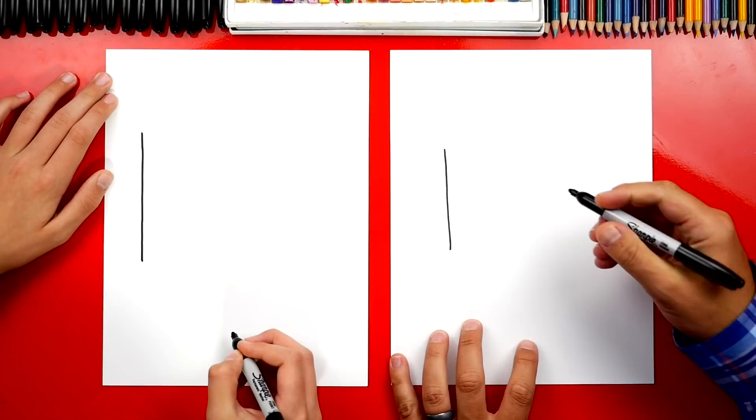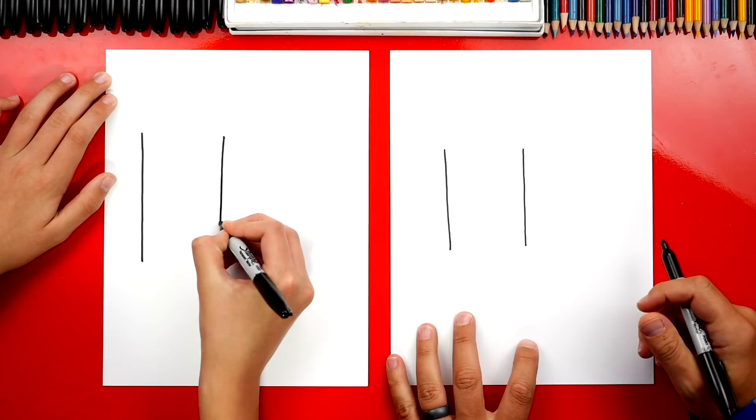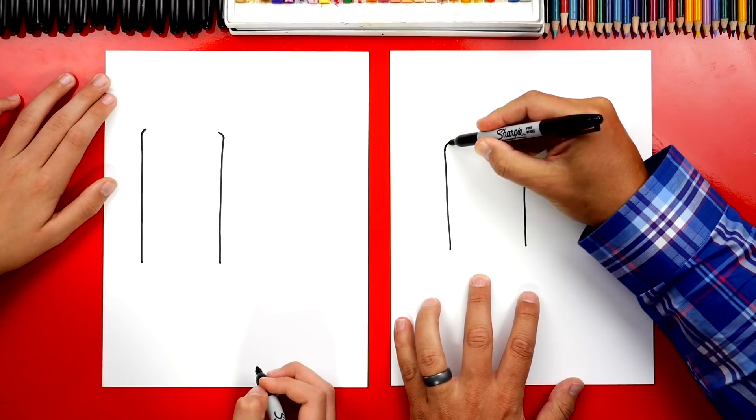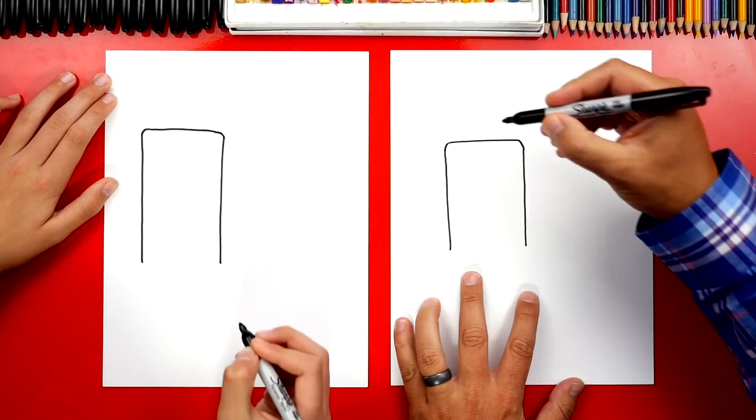Okay, now right here at the top let's draw a little curve that comes in. So we're just gonna draw the elastic at the top of our sock. Then we can draw a line that connects those two lines. Then let's draw the elastic part, so we're gonna draw a shorter line coming up on both sides that match. Then let's connect those two lines.